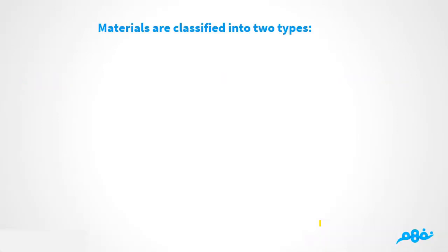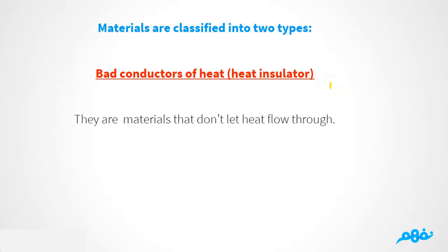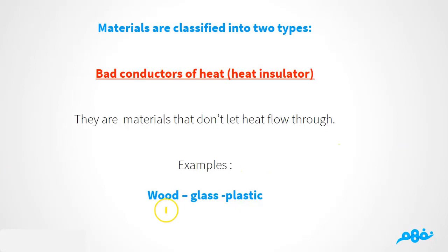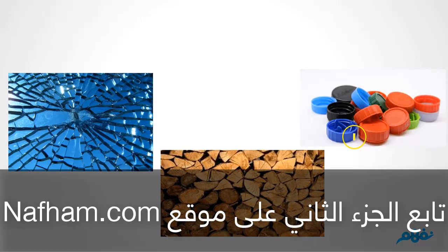The second type of material is bad conductors of heat, also called heat insulators. Heat insulators are materials that don't let heat flow through — they block heat. Good conductors allow heat to flow through, but bad conductors, or heat insulators, do not. Examples include wood, glass, and plastic — these are all heat insulators.